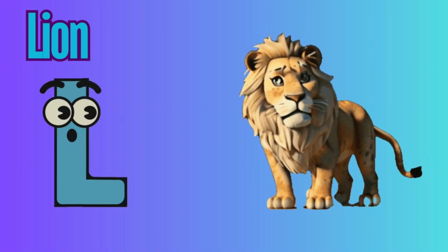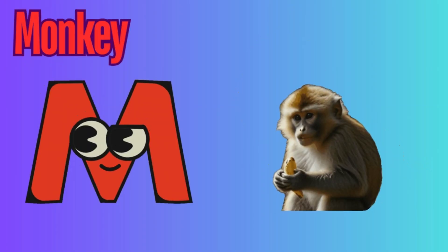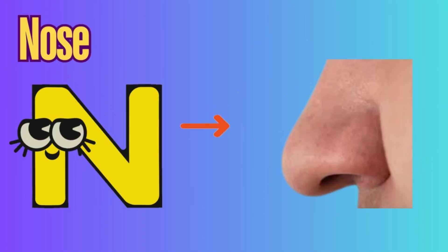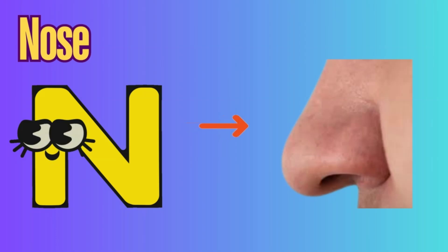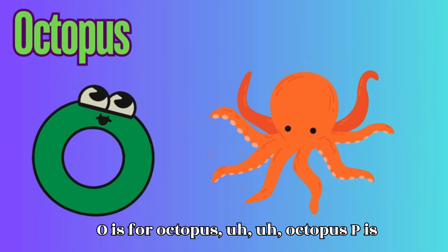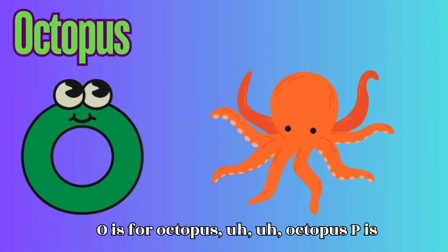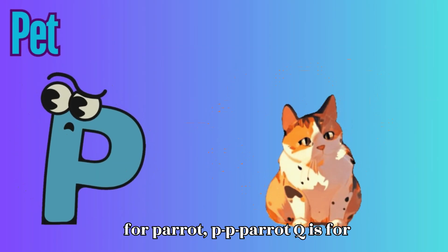L is for Lion. L-L-Lion. M is for Monkey. M-M-Monkey. N is for Nose. N-N-Nose. O is for Octopus. O-O-Octopus.